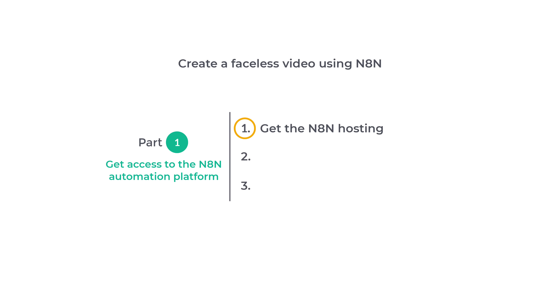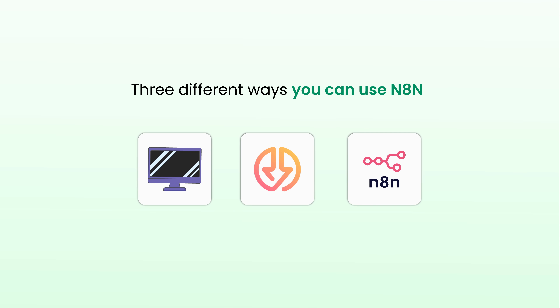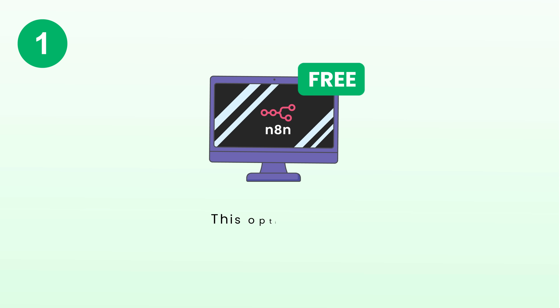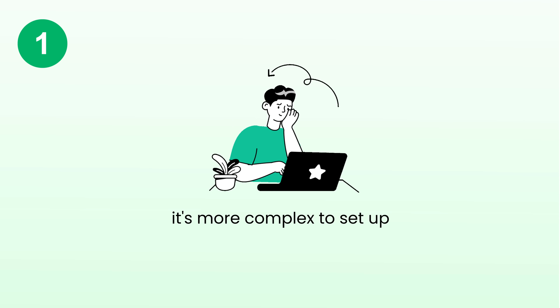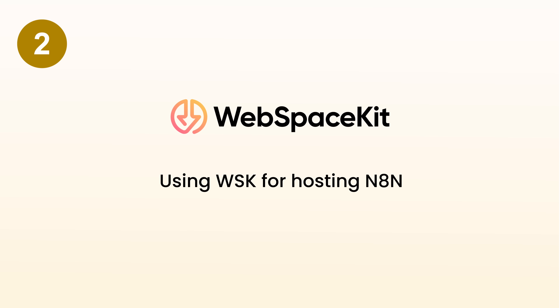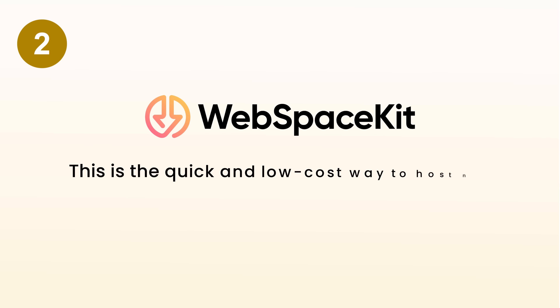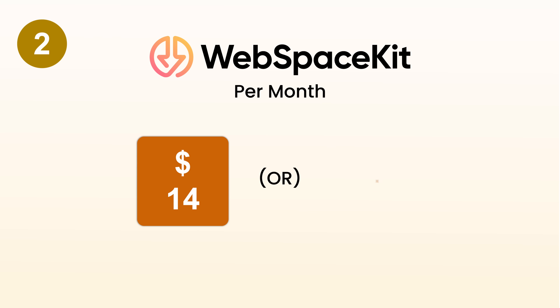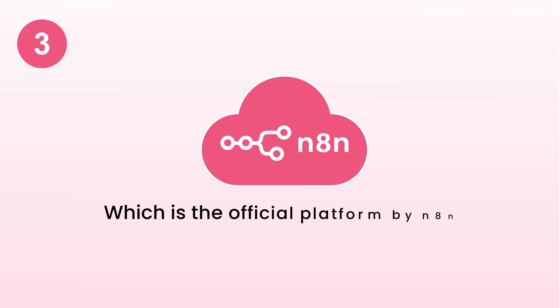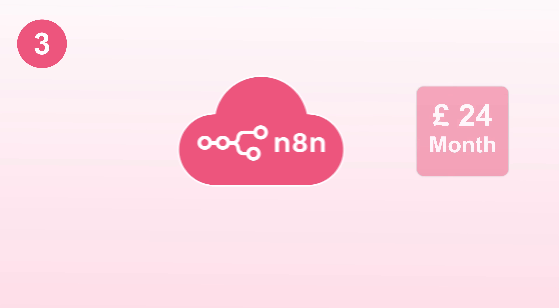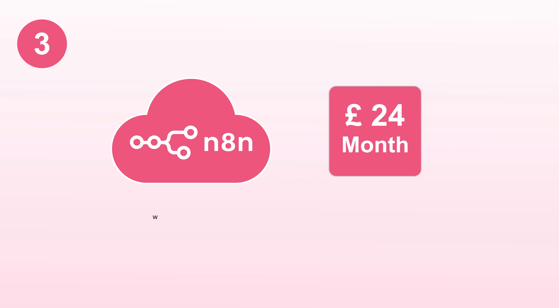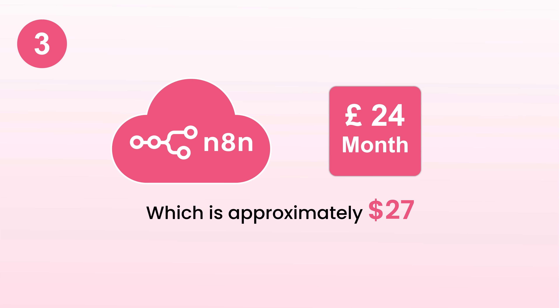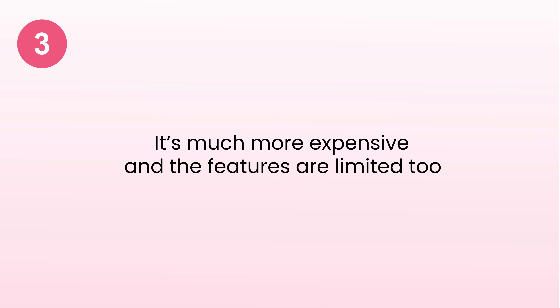The first step is to get the NATEN hosting. There are three different ways you can use NATEN. The first option is to host NATEN locally on your computer — this option is free but more complex to set up. The second option is using WSK for hosting NATEN, which is the quick and low-cost way at just $14 per month or 1170 Indian rupees per month. The third option is NATEN cloud, the official platform, which costs around £24 per month — approximately $27 — so it's much more expensive and the features are limited too.